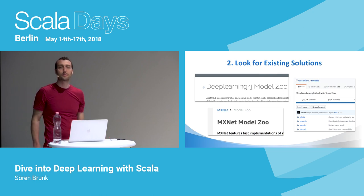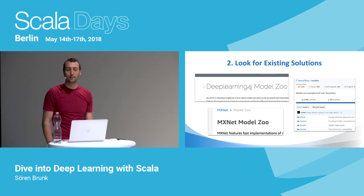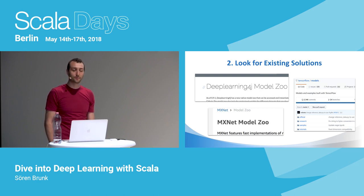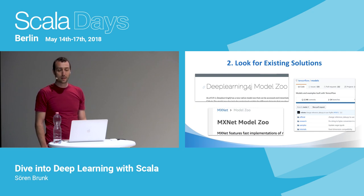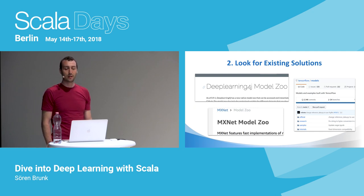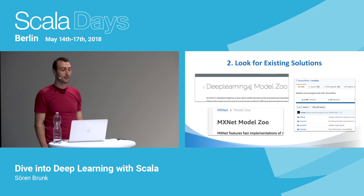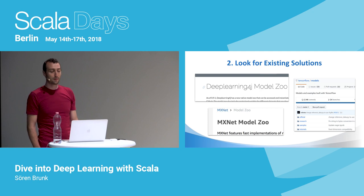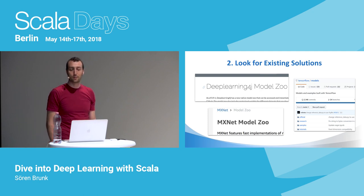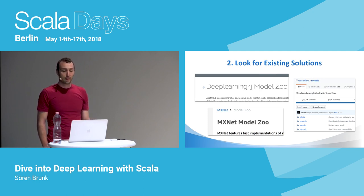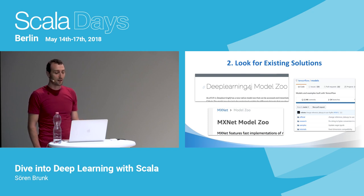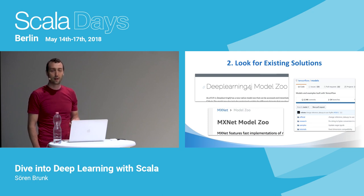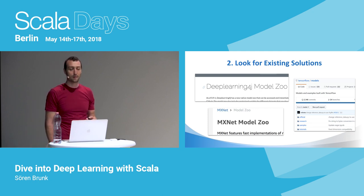The next step is to look for existing solutions. If you're very lucky, there's already a pre-trained model for your task. Usually that's not the case, but sometimes a similar model exists — like an image recognition model trained on other images — and you could try transfer learning. That's especially helpful if you don't have much data and want to speed up training. Or you could build on an existing architecture and adapt it. To keep things simple, let's build something from scratch.